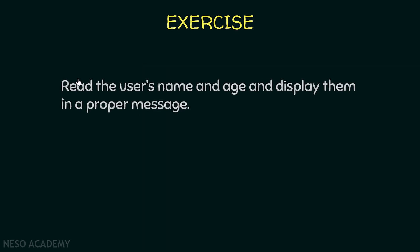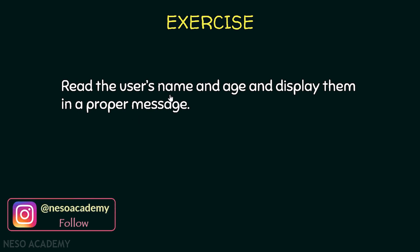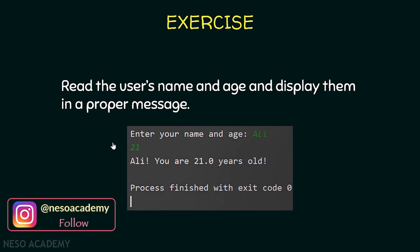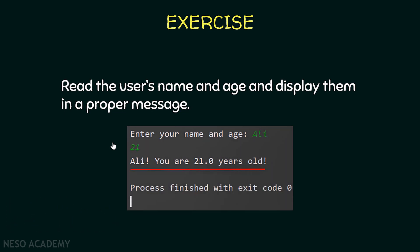The exercise is the following: we want to read the user's name and age and display them in a proper message. Here is an example of running the program — the user can enter his name and then his age, and finally we print both in a message. So we are reading two things from the user: the name and the age.